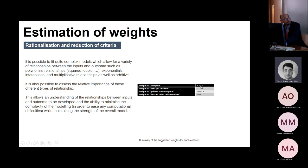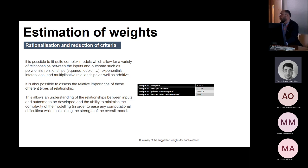These are the weights we found. For instance, links to other urban services — the fact that you can walk from your door to a bus stop or tube station — counts for 0.41 out of 1 in the final quality of living score.